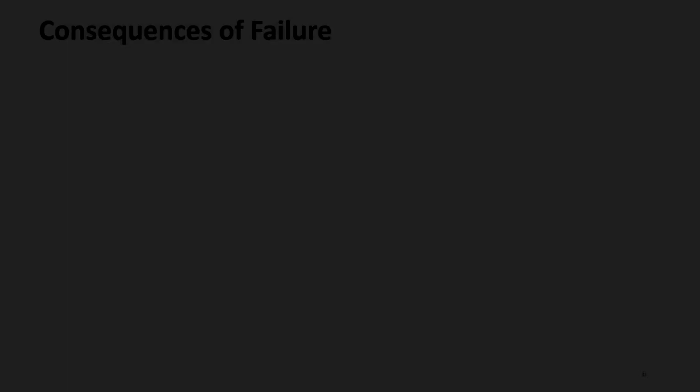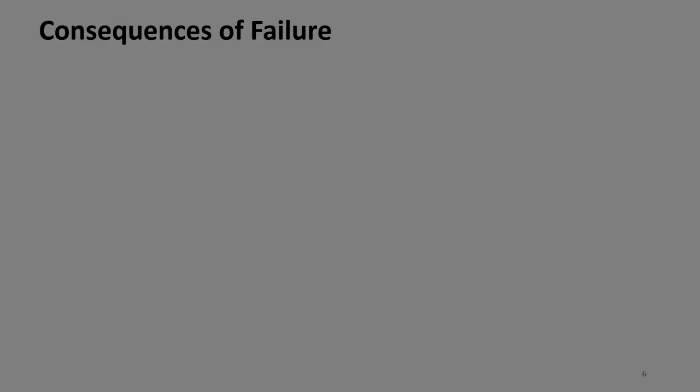Finally, I want to look at one other thing: consequences of failure. I wouldn't necessarily call this a source of uncertainty, but it is something we factor in at the same time as considering uncertainty. The easiest way to visualize this is to imagine the difference between beams and columns.